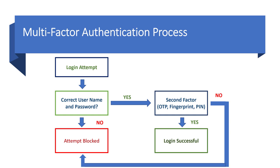Here's the process. First of all, a user logs in, and the very first thing the computer asks is: do you have the correct username and password? If the answer is yes and you have a second factor — which is a one-time password, a fingerprint, or a PIN — that has to be correct for a successful login. If the answers to either the username and password or the second factor are no, then the attempt gets blocked.